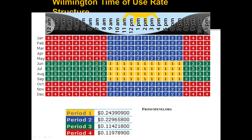Period two is the peak during the day in winter, which is also fairly high. At night, periods three and four are a little bit lower — about $0.11 per kilowatt hour. So it's more than $0.20 during the day, a little bit higher in the summer than the winter, and about $0.11 at night.